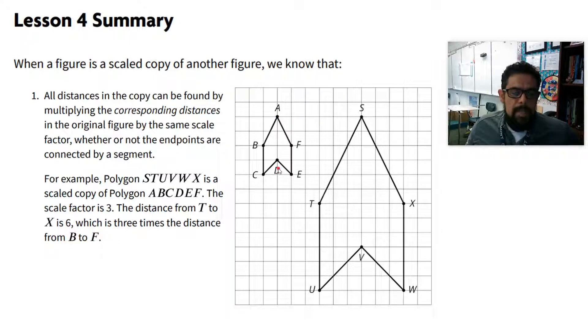The scale factor is three. The distance from T to X is three times the distance from B to F. So because this bigger one here is a scaled copy of this small one, every distance is the same times three. If I look here, the example we have from T to X, that's this here, this is six units from B to F. The corresponding part there in the original is two units. So it's two times three, which is six.